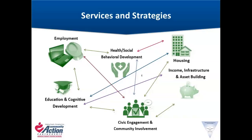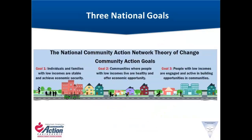We'll talk in another section about local theories of change. At the very top of the theory of change are the three national goals — goals for the individuals, families, and communities that represent our low-income people. These are: that individuals and families move out of poverty, that they are stable as they do that, that they are engaged in their communities, and that communities are healthy and offer opportunities. That's a brief overview of the national theory of change.